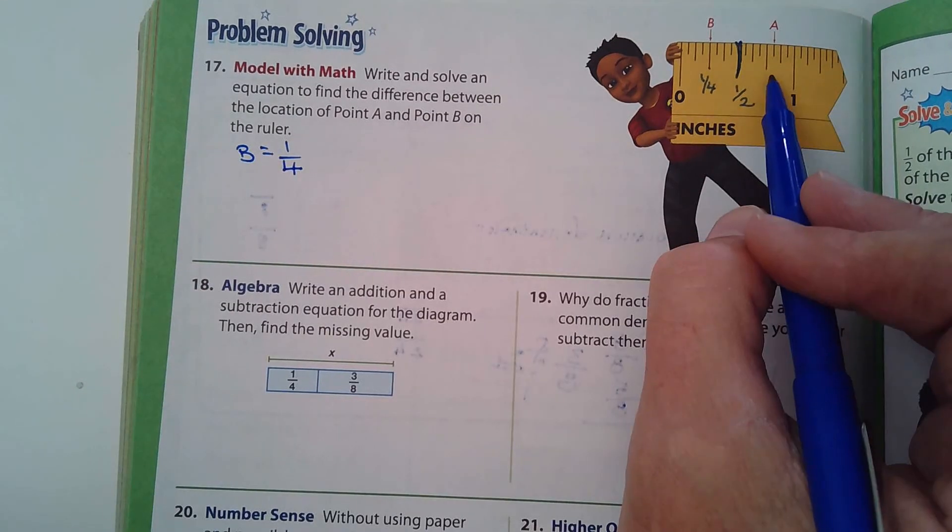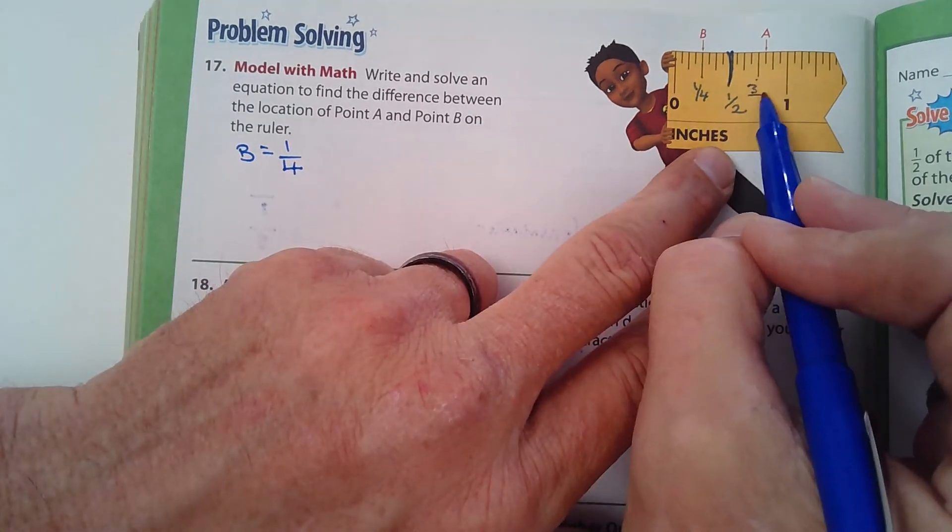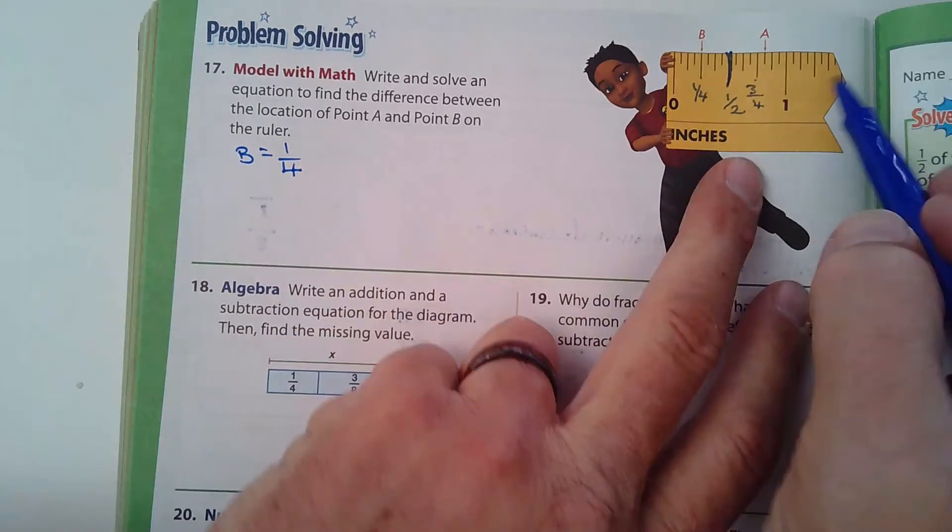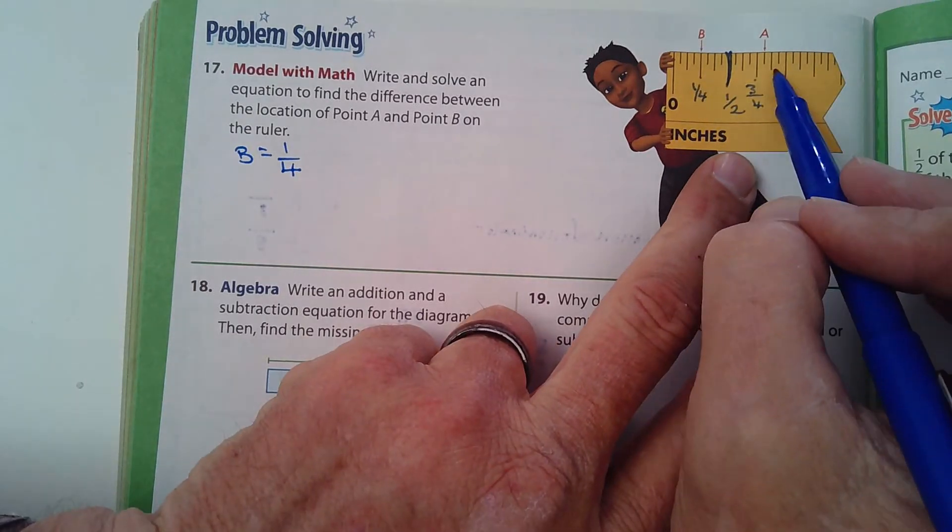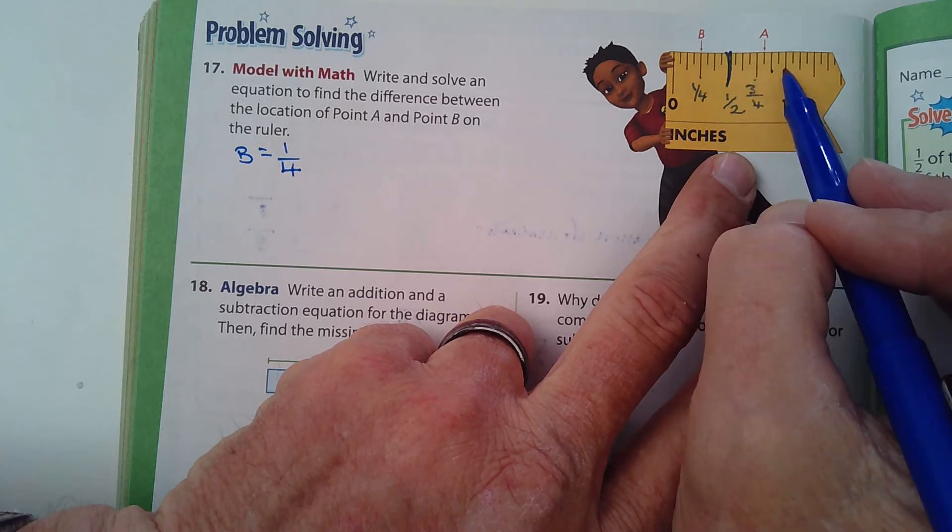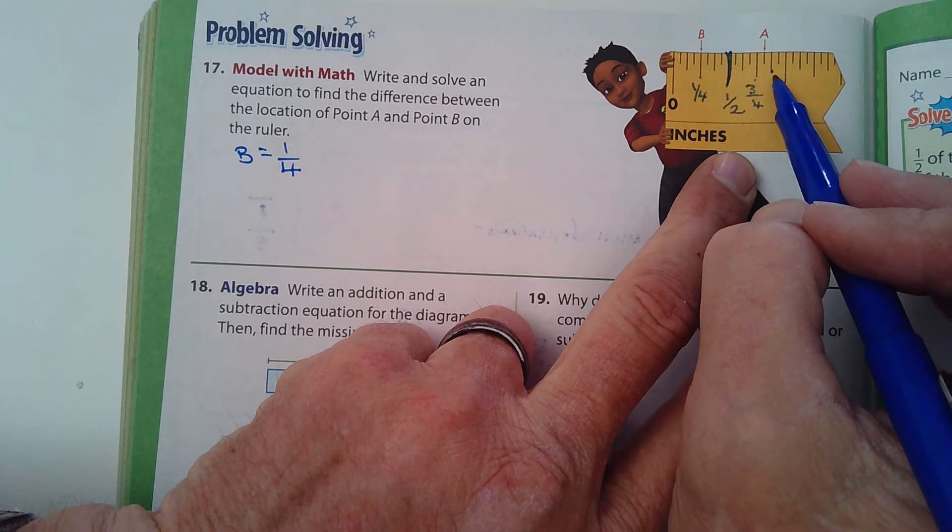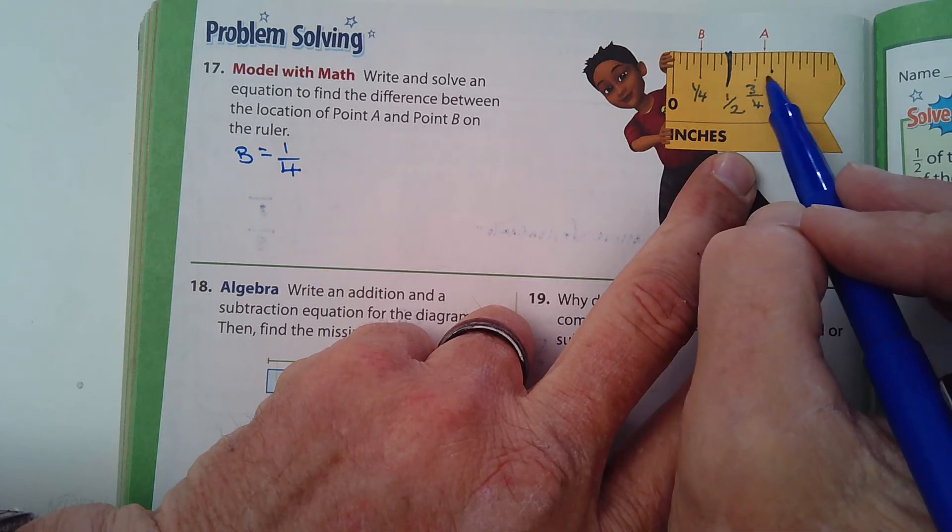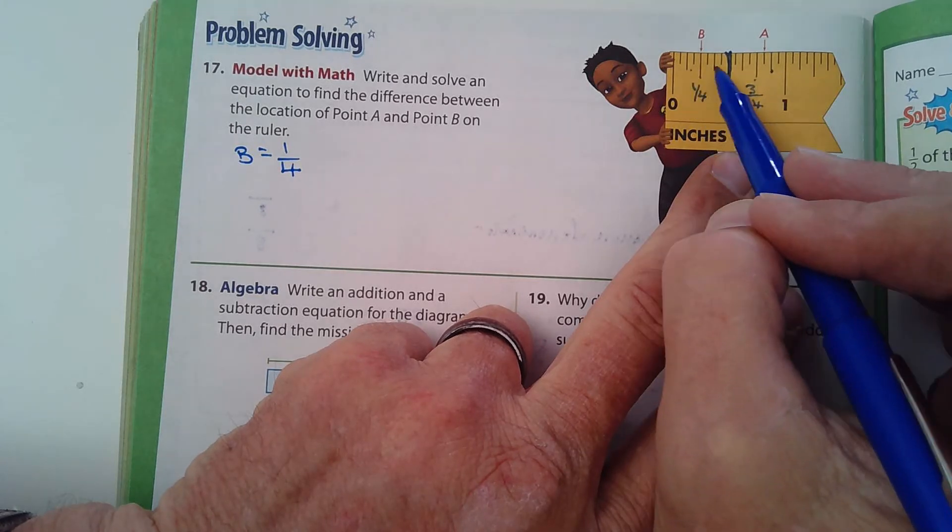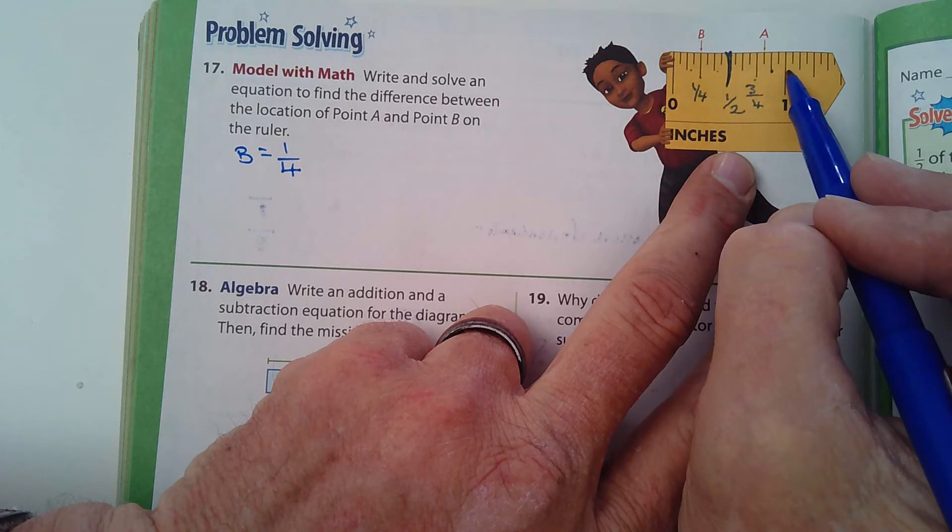Do you know what this mark is right here? This one? That's a half. What's half of a half? Right here. That's one quarter. So B, I'm just going to come over here. B equals one quarter. And so what would be right here? This would be three quarters. So then this would be, this mark right here would be eighths.